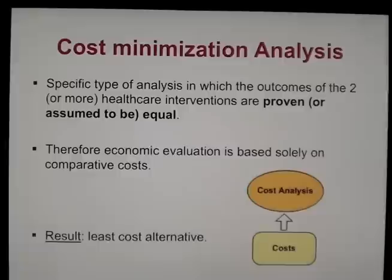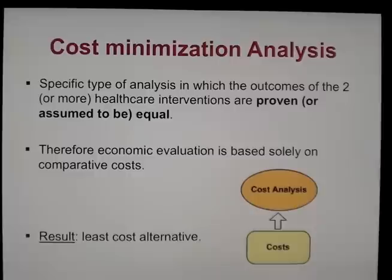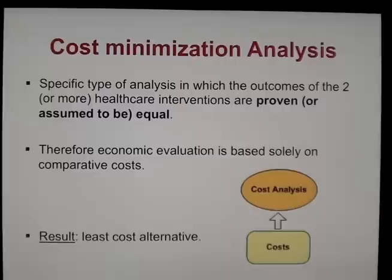Cost-minimization analysis is the simplest of the four types but also rarely appropriate, because we have to be able to show that the consequences are equivalent between alternatives. For a cost-minimization analysis, we're simply looking at the delta C between alternatives, and the result is a least-cost alternative between the two options compared.